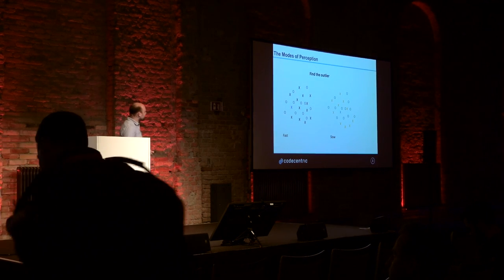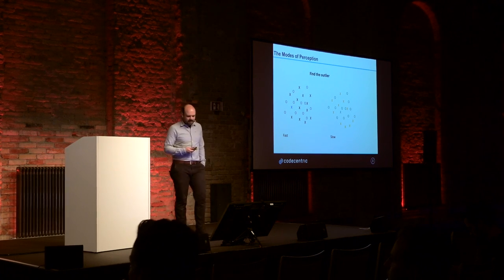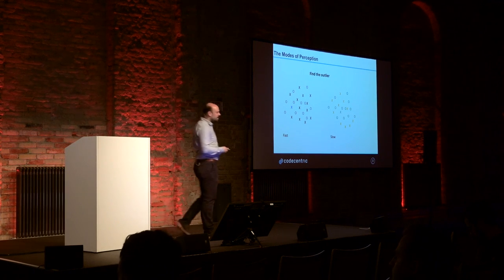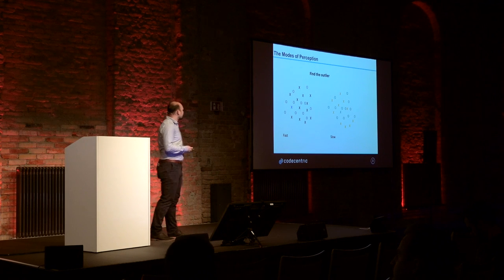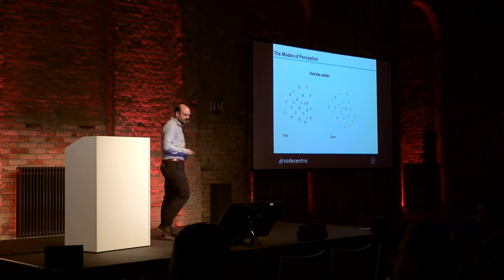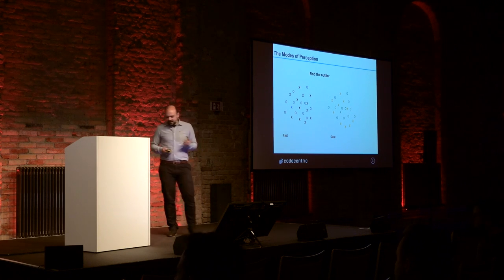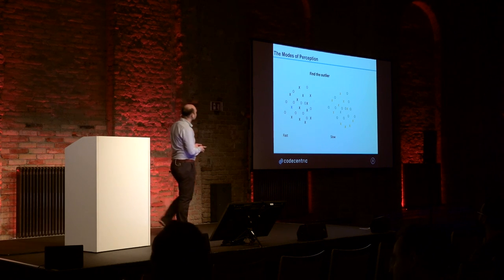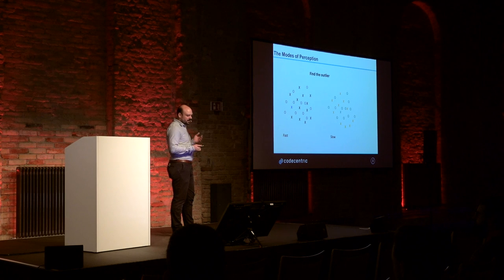Let's have a look at this picture. The task is to find the outlier, and as most of you will see, on the left side it's quite easy — you'll be able to find the outlier very fast — and on the right side it's slow. There's a reason for this, and that's basically one of the things you have to consider when you create or design graphics or visualizations: how do you get the message to the user.